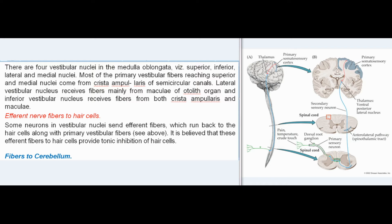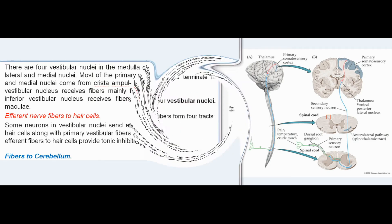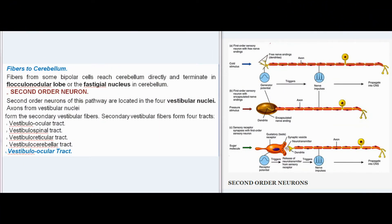Efferent fibers to hair cells run back along with primary vestibular fibers and provide tonic inhibition. Fibers from some bipolar cells reach the cerebellum directly, terminating in the flocculonodular lobe or the fastigial nucleus. Second-order neurons are located in the four vestibular nuclei. Their axons form secondary vestibular fibers, which form four tracts: the vestibuloocular tract, vestibulospinal tract, vestibuloreticular tract, and vestibulocerebellar tract.